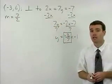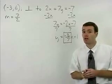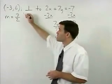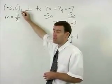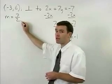Now what I'd like you to do is write the equation of our line knowing that it passes through the point (-3, 6) and has a slope of 7/2.